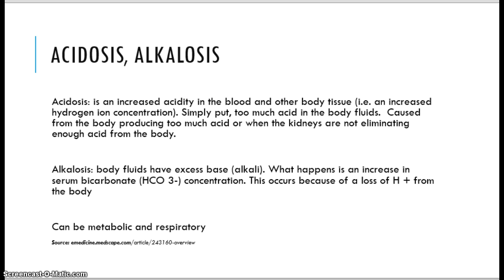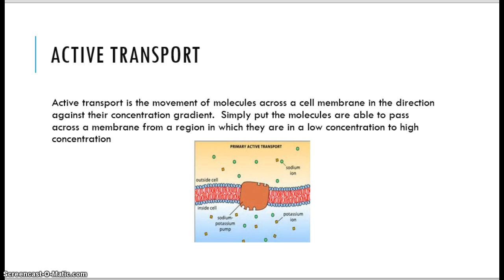Acidosis and alkalosis are two things you've had in chemistry. Acidosis is the acidity in the blood — increased hydrogen ion concentration. Alkalosis is excess base or more alkali; it happens when there's an increase in serum bicarbonate HCO3 concentration, usually a loss of hydrogen from the body. We also define them as metabolic or respiratory, so you can have metabolic acidosis, metabolic alkalosis, and the same with respiratory.